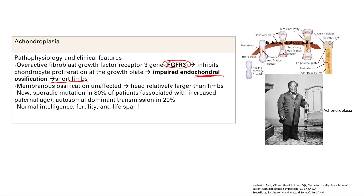You're going to have someone short — you get dwarfism. This is the most common cause of dwarfism. Note that it can be genetic; it's autosomal dominant, but that's only in 20% of patients. The rest have new sporadic mutations, and usually the risk is with increased paternal age. Also note that these patients have normal intelligence, fertility, and lifespan.